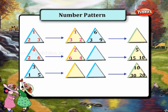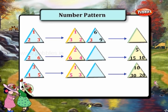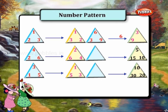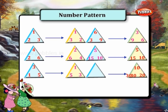Following this pattern, let us fill in the numbers in the following triangles. 1, 3, and 5 becomes 5, 1, and 3. 3, 6, and 9 becomes 9, 3, and 6. 5, 10, and 15 becomes 15, 5, and 10. 10, 20, and 30 becomes 30, 10, and 20.